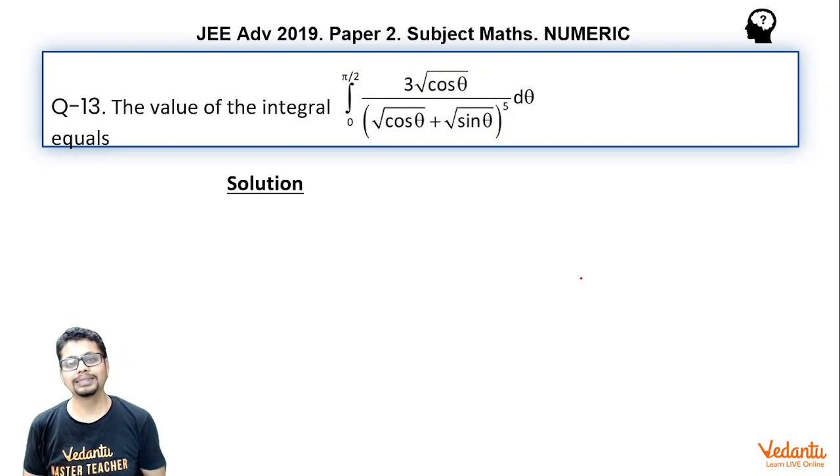And ultimately, you'll get using that property integral 0 to pi by 4, 3 by under root cos theta plus under root sin theta whole to the power 4 d theta. And then you'll not be benefited any further from any property as such. And you'll have to do the integration in the indefinite way and then put the limits.